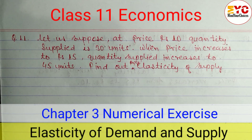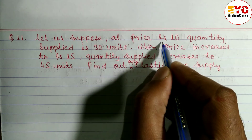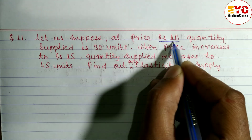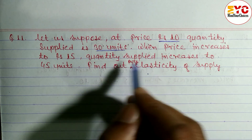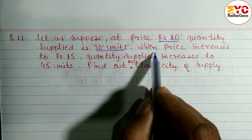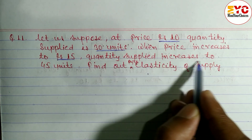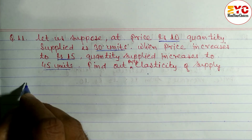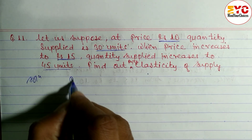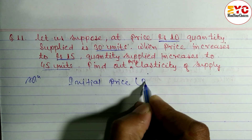In this video we will learn how to find out price elasticity of supply. Here we have a question: suppose at rupees 10 — this is the initial price — quantity supplied is 30 units, this is the initial quantity supplied. When price increases to rupees 15 — this is the new price — quantity supplied increases. Find out the price elasticity of supply.